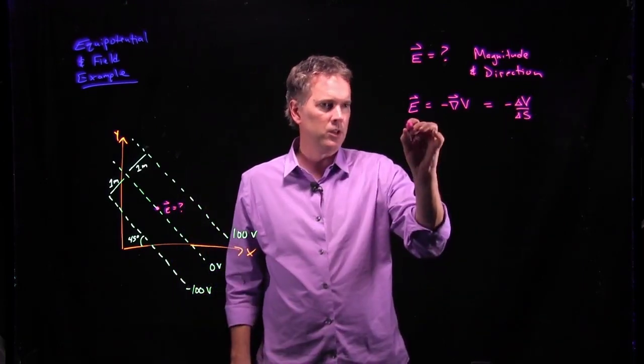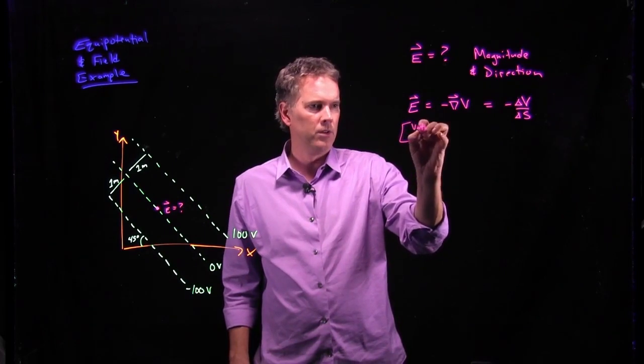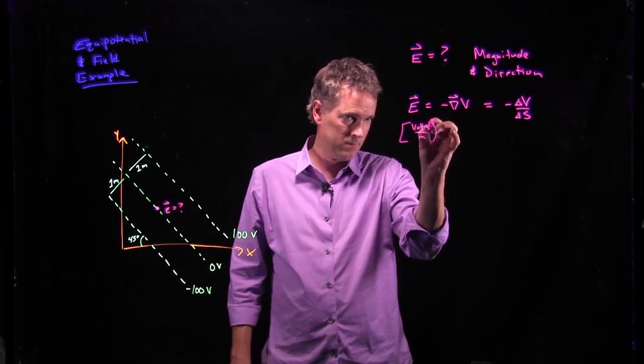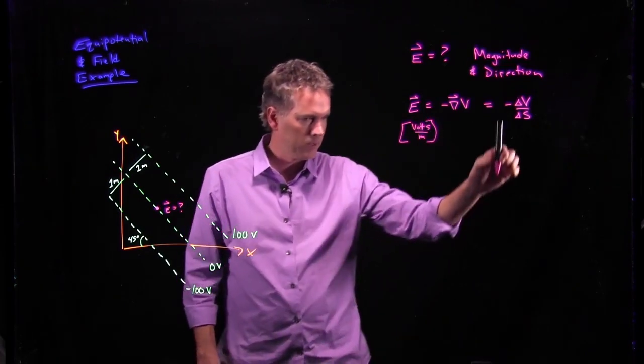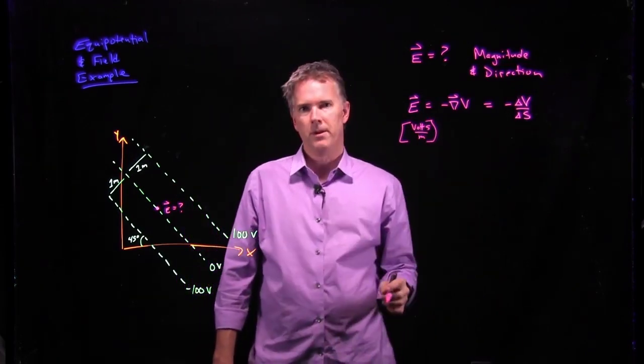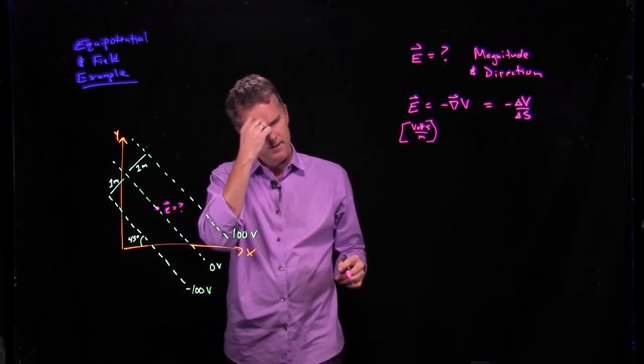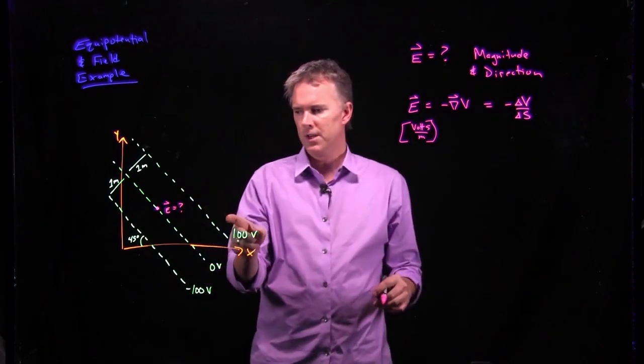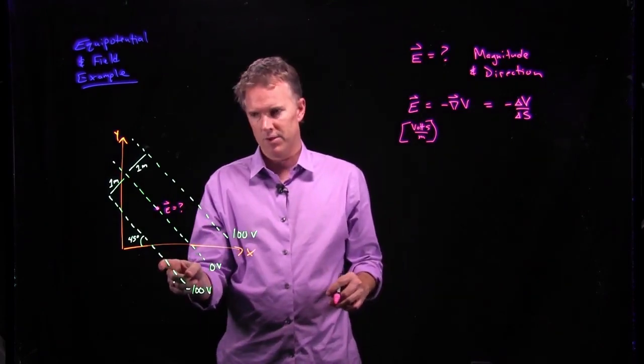Electric field is in units of volts per meter, which is exactly what we get right here, volts per meter. How do we think about this? This is high voltage here, this is negative voltage over here.